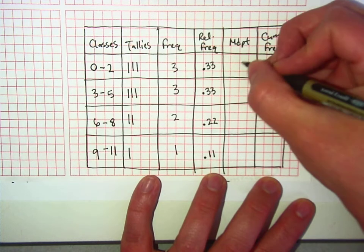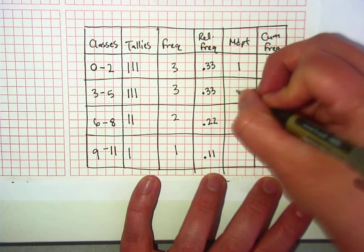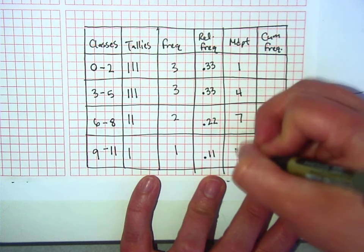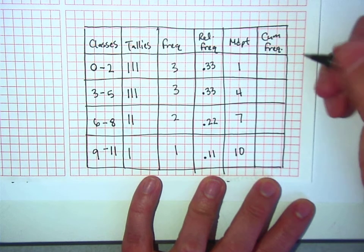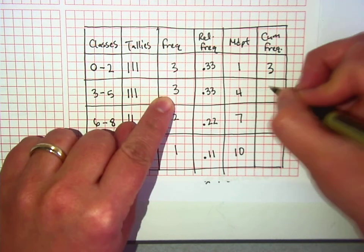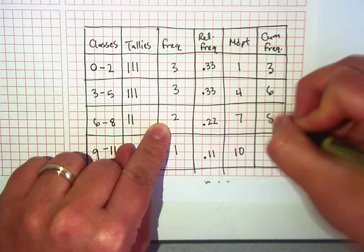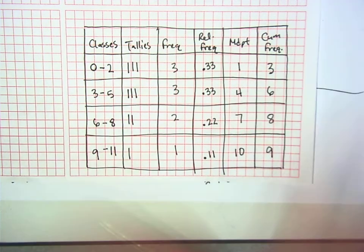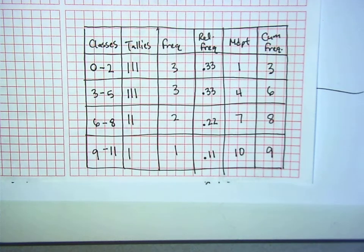Midpoint, halfway between 0 and 2 is 1, 4, 7, 10. And cumulative frequency is adding up as you go. So we start with 3, then add 3 to get to 6, add another 2 to get to 8, add another 1 to get to 9. Do you guys have the same thing I do? Anybody have any questions about that?